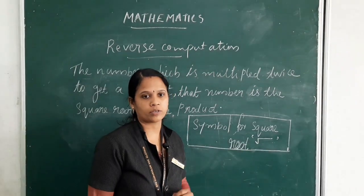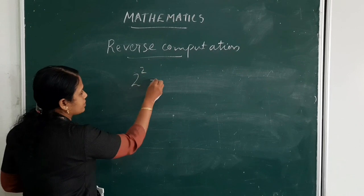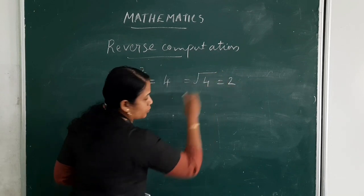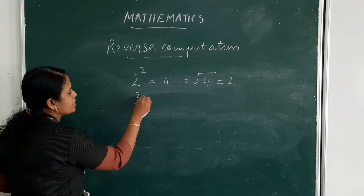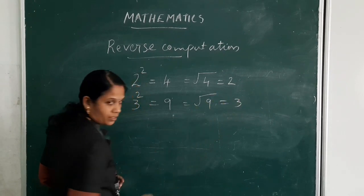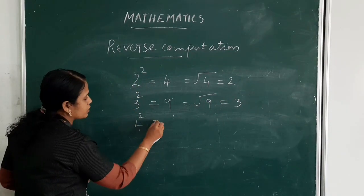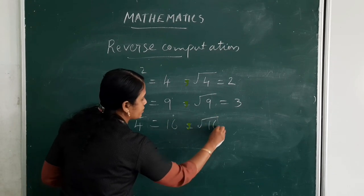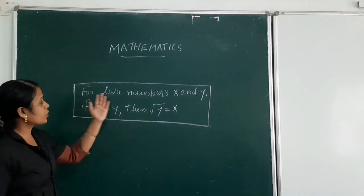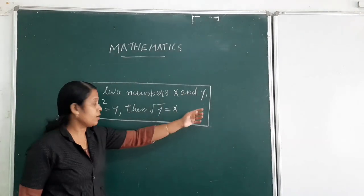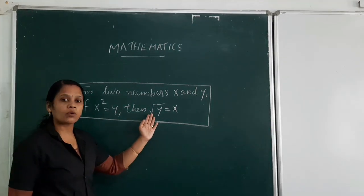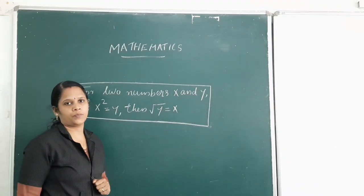This is the symbol of square root. For example: 2² = 4, so the square root of 4 is 2. 3² = 9, so the square root of 9 is 3. 4² = 16, so the square root of 16 is 4. Now understood: for two numbers x and y, if x² = y, then the square root of y equals x.